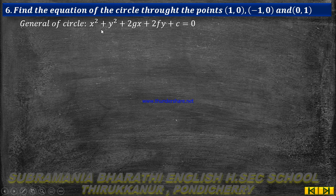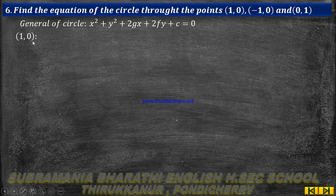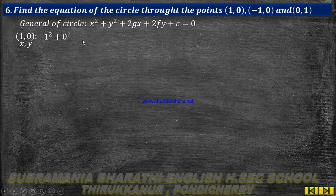In the general equation of the circle, we apply the points one by one. First, point (1, 0): x equal to 1, y equal to 0. Substituting: 1 squared plus 0 squared plus 2g into 1 plus 2f into 0 plus c equal to 0.